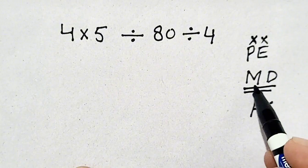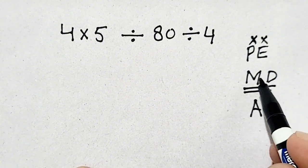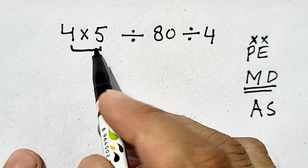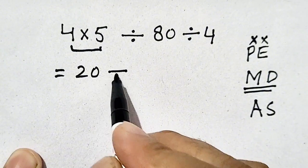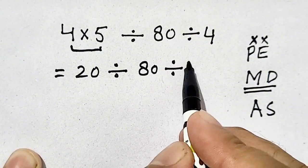According to PEMDAS, the function which is at left will be performed first. So we have to perform multiplication. 4 times 5 equals 20 divided by 80 divided by 4.